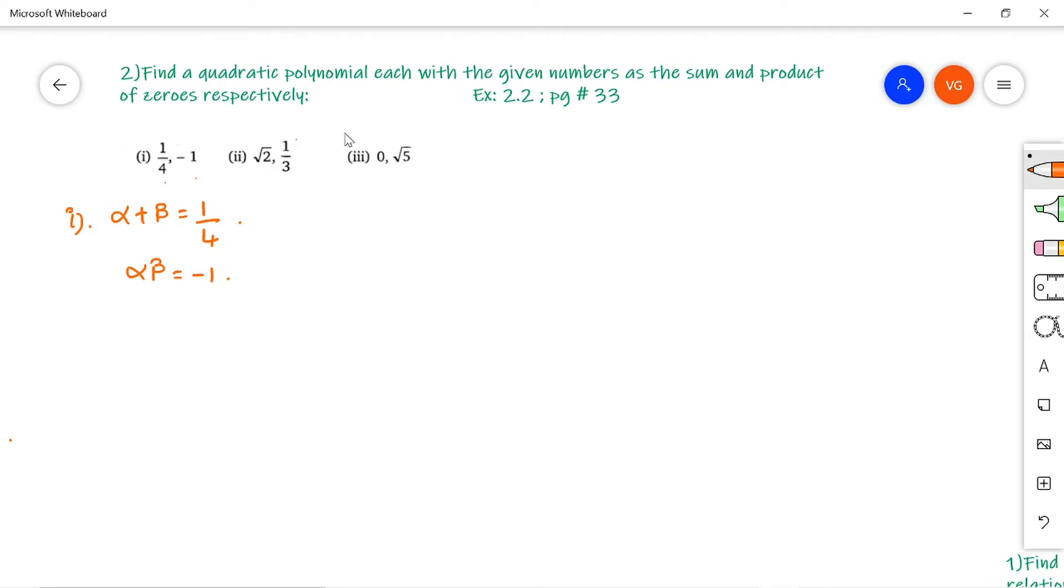As I have explained, if you are given the sum and product of zeros, the quadratic equation can be written as x² - (α + β)x + αβ = 0, where α + β is the sum of zeros and αβ is their product.